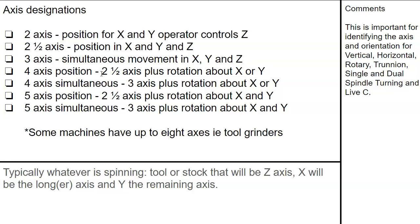Fifth axis to position is basically cutting five sides of a cube. Five-axis simultaneous is when you see those impellers, stators, and really wild geometries — those are usually five-axis. Machines can have more axes; there are tool grinders with eight axes of movement to make the cuts.